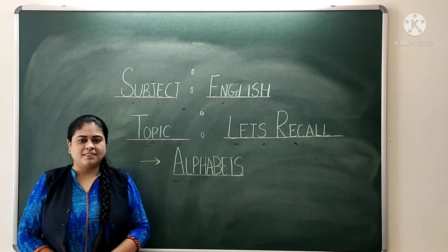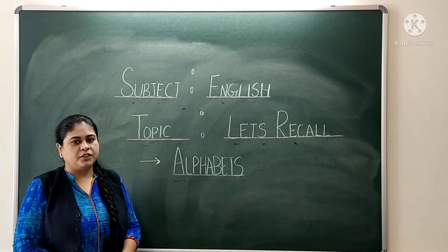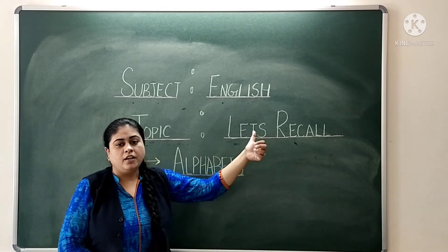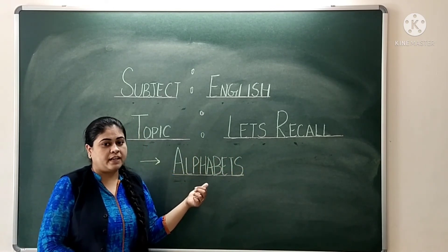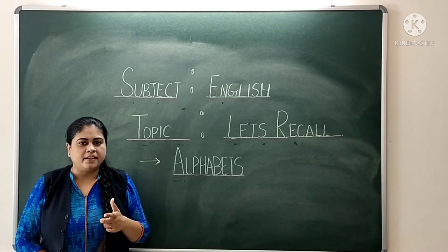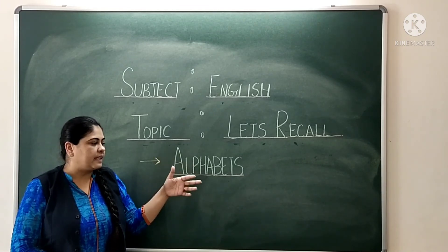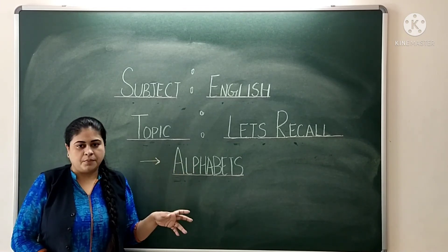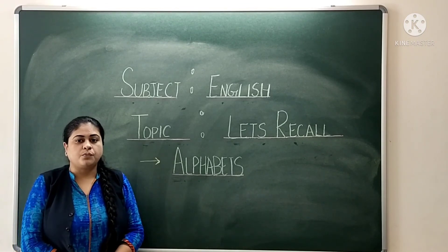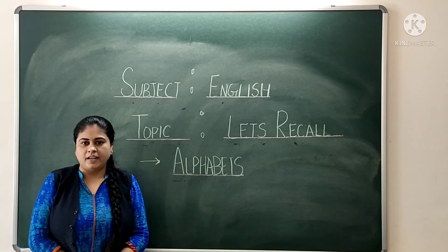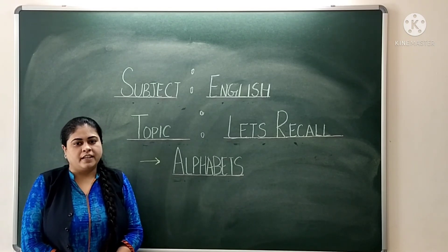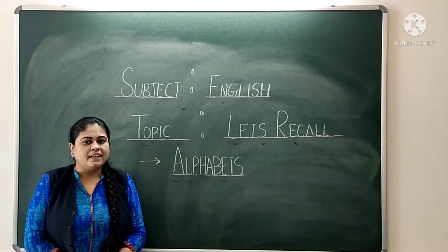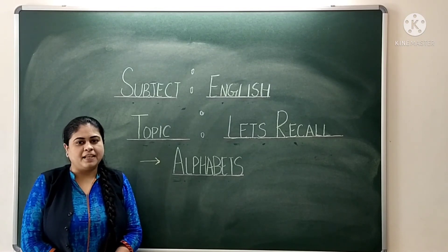Students, I hope you all have understood today's topic. What we have done today is let's recall of alphabets. In alphabets, we learnt that there are 26 letters. We learnt capital letters as well as small letters, and we learnt how to write them in the four-line notebook. For the next class, be ready with your homework. Till then, be safe, be happy. Bye bye.